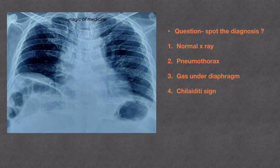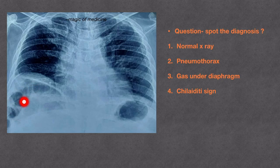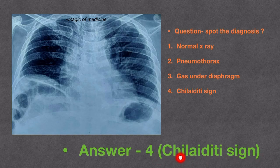Now there is a question for you — spot the diagnosis. Options are: is this a normal X-ray? Is it a pneumothorax? Is there gas under the diaphragm? Or is it a Chilaiditi sign? We again see air under the diaphragm, but there is a catch: there are haustrations within this air, suggestive of colonic air. This haustration here is suggestive that this is colon interposed between liver and diaphragm. So the answer is Chilaiditi sign.